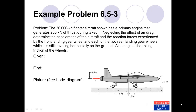We read the problem and try to understand what's given and what we're being asked to find. We're told the mass of the fighter aircraft is 30,000 kg. We're also told the thrust force being applied to the aircraft — we'll call that T — which is equal to 200,000 newtons. We're asked to find the acceleration of the aircraft, and also the reaction forces at the wheels: the front wheel, which we'll call normal force A, and the two rear wheels, each called normal force B.